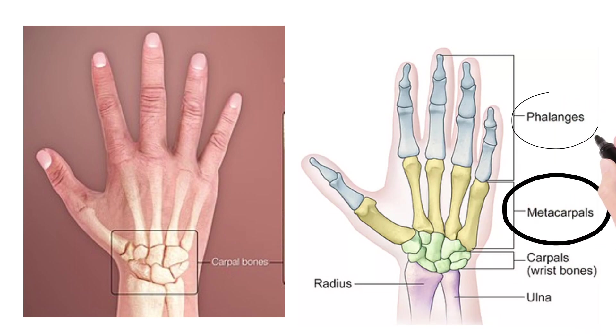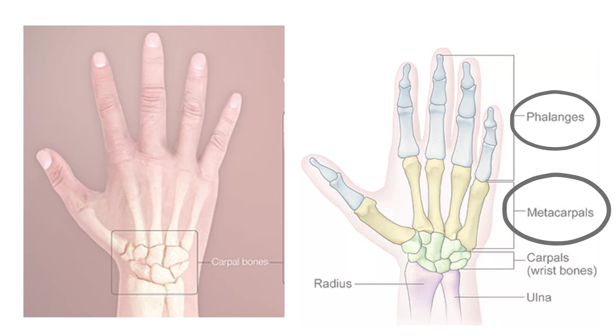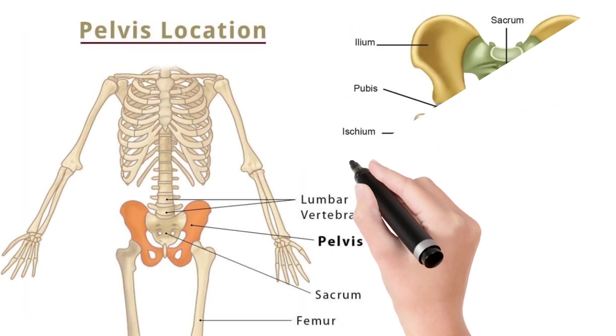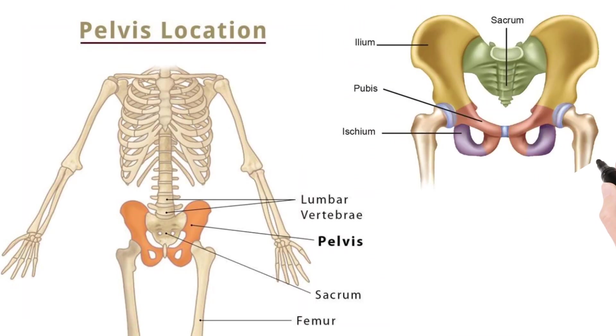In the finger regions there are finger bones called phalanges, and in the pelvis region the ilium, ischium, and pubis bones will be seen.